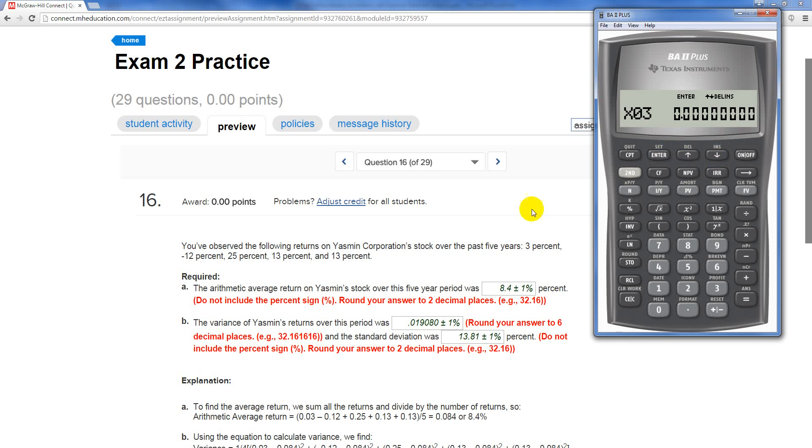Arrow down again. The third year is 25%. Point, two, five, enter. Arrow down. Y03, we leave alone.